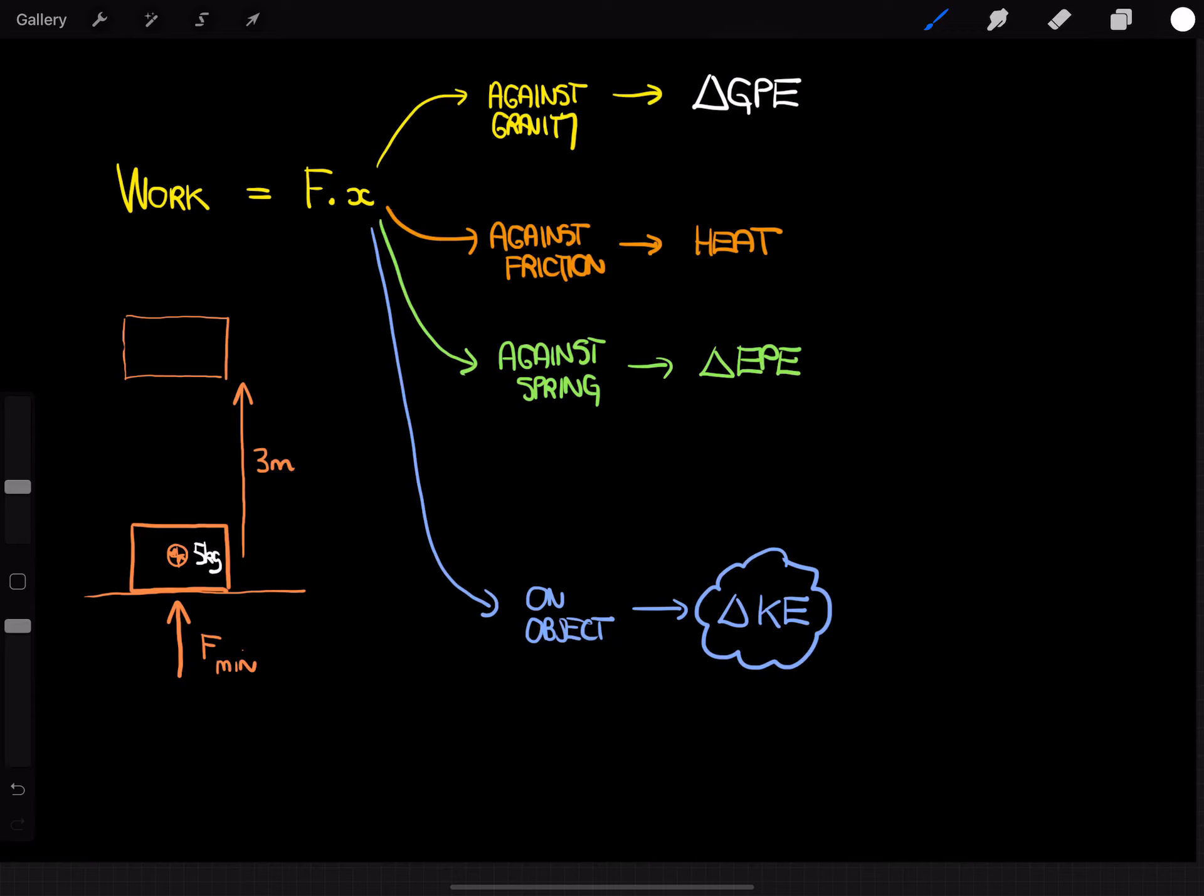And so the weight force of this box is going to be, by the way, we'll take g equals 10 just to make it nice and easy. So the weight force is going to equal 50 newtons. And so the minimum force you need to lift it will be 50 newtons.